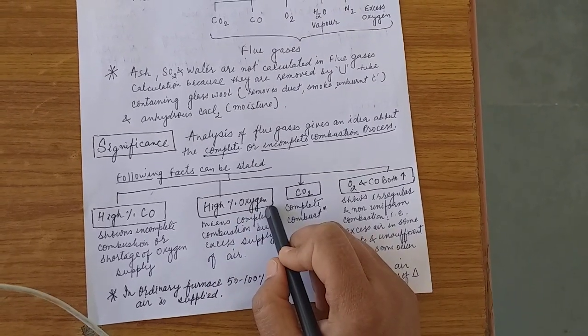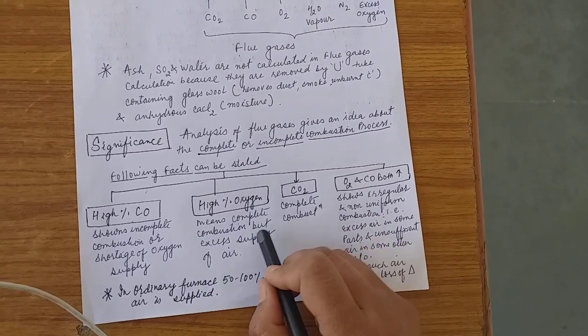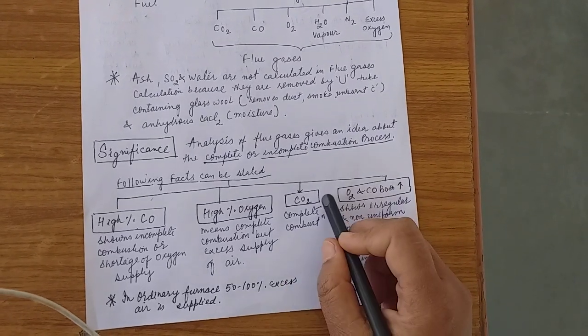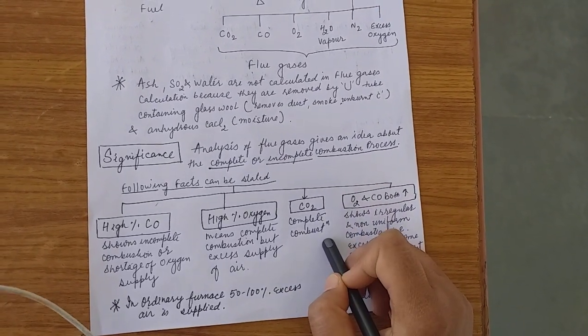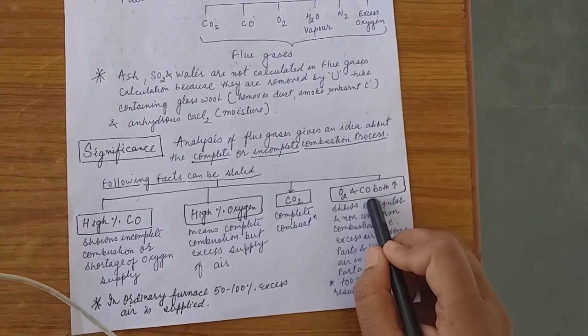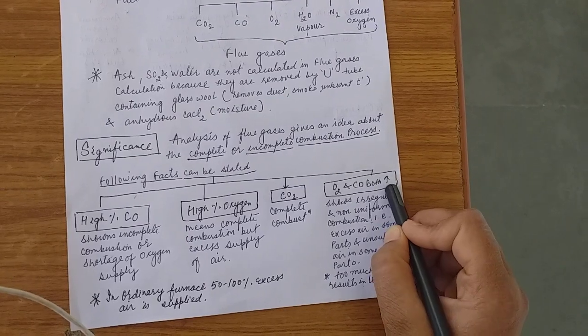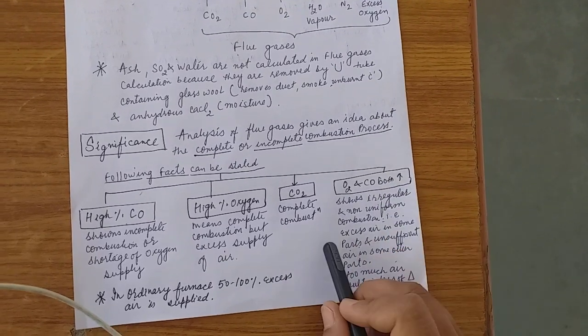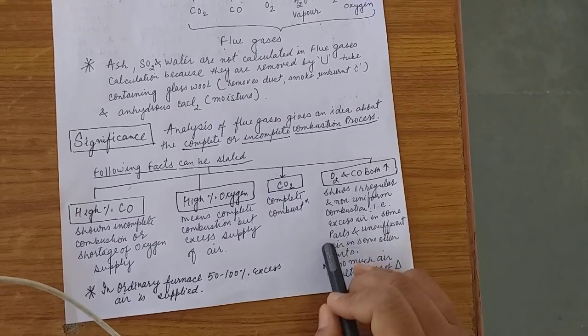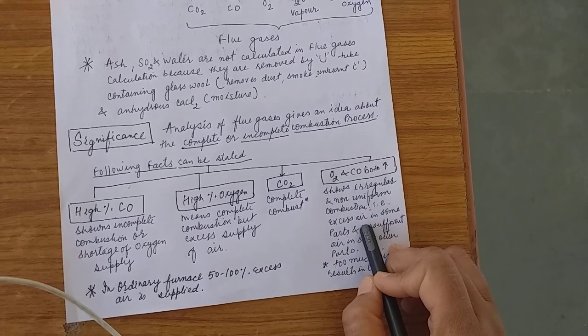If there is a high percentage of oxygen, it means complete combustion but excess supply of air. If there is CO2, it shows complete combustion of the fuel. If there is O2 and CO2 both in high percentage, it shows irregular or non-uniform combustion.